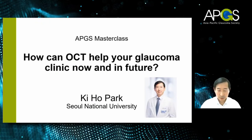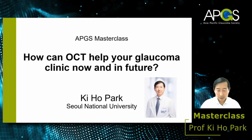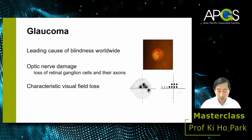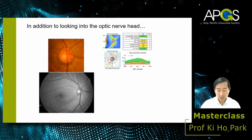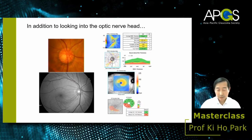It is my great honor and pleasure to provide a lecture at the first APGS masterclass. I'll be sharing how OCT can help your glaucoma clinic now and in the future. Glaucoma is a leading cause of blindness worldwide, where the optic nerve is damaged with loss of retinal ganglion cells and their axons, causing characteristic visual field loss. Classically, we look at the optic nerve head and perform perimetry; nowadays we also evaluate the retinal nerve fiber layer by photography or OCT, as well as the inner retinal layer of the macula where ganglion cell bodies are located.